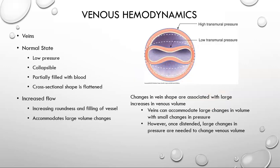Let's discuss venous hemodynamics. Veins in their normal state have low pressure — they're very collapsible and usually only partially filled with blood. Their normal cross-sectional shape is flattened, somewhat of a figure-eight shape. With increased flow, the roundness of the vessel continues increasing until it is completely full. Once full, it is very difficult to change the volume flow without a huge change in pressure.